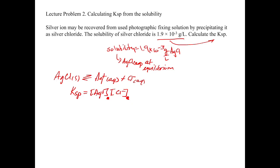We add the equilibrium concentrations of silver and chloride — those are the concentrations at saturation. To get started, the first thing we have to do is get the solubility into something we can work with. We have to divide by the molecular weight to go from mass solubility to molar solubility. Dividing by 143.32 grams per mole gives a concentration of 1.33 times 10 to the minus 5 moles per liter.